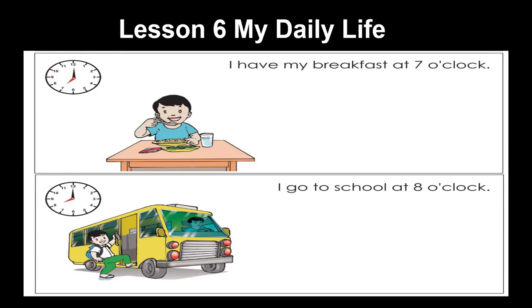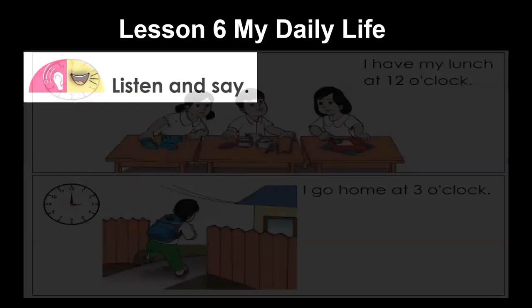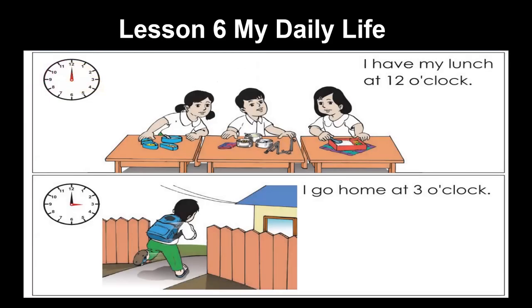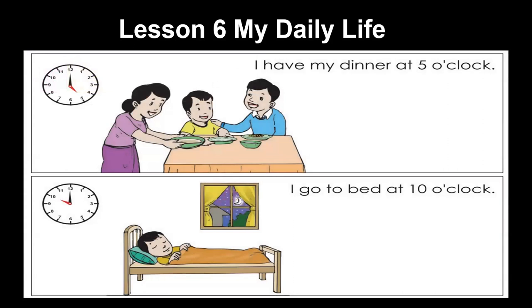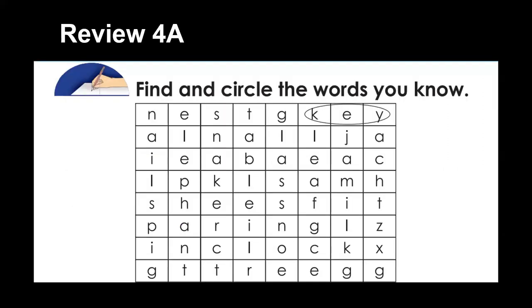I go to school at 8 o'clock. I have my lunch at 12 o'clock. I go home at 3 o'clock. I have my dinner at 5 o'clock. I go to bed at 10 o'clock. Now we are going to find and circle the words you know.